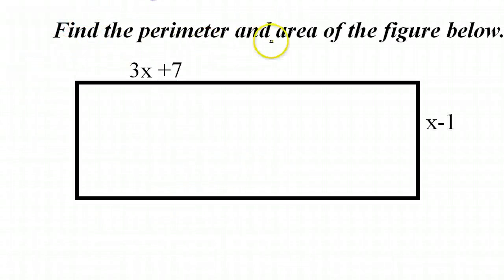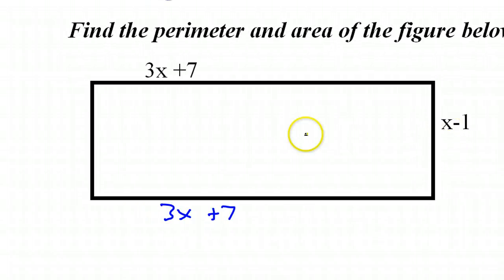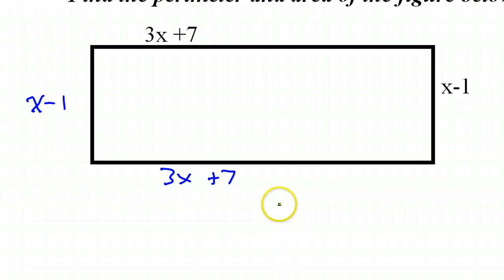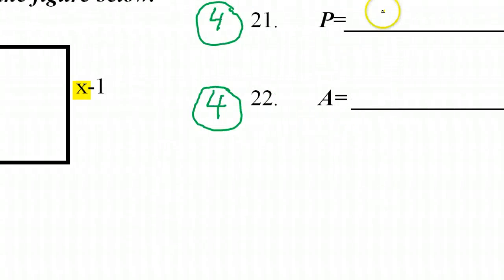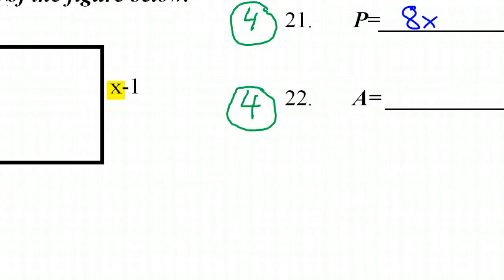All right. So now we're supposed to find the perimeter and area of this figure. So we talked about this before. But the perimeter is just the sum of all the sides. So if this is 3x plus 7, then this will be 3x plus 7. If this is x minus 1, then this will be x minus 1. So for the perimeter, we're just going to add all of these up. And you really don't even need to move them. You can just add them right here. So start combining your like terms. So we've got 3x and 3x. So far, that's 6x's. And then we've got 2 more. So that's a total of 8.